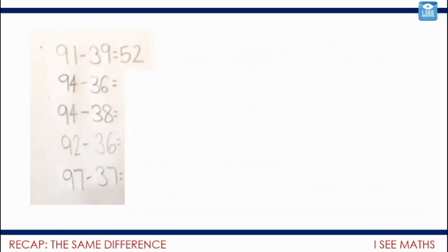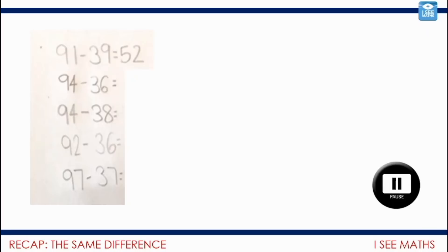This example was sent through yesterday and I loved it. I wonder if we can apply that understanding we just looked at to answer these questions. We've been given 91 subtract 39 equals 52. How can we use that number sentence to work out the next one? How can we use 94 subtract 36 to work out the next one? Pause the video and have a go.